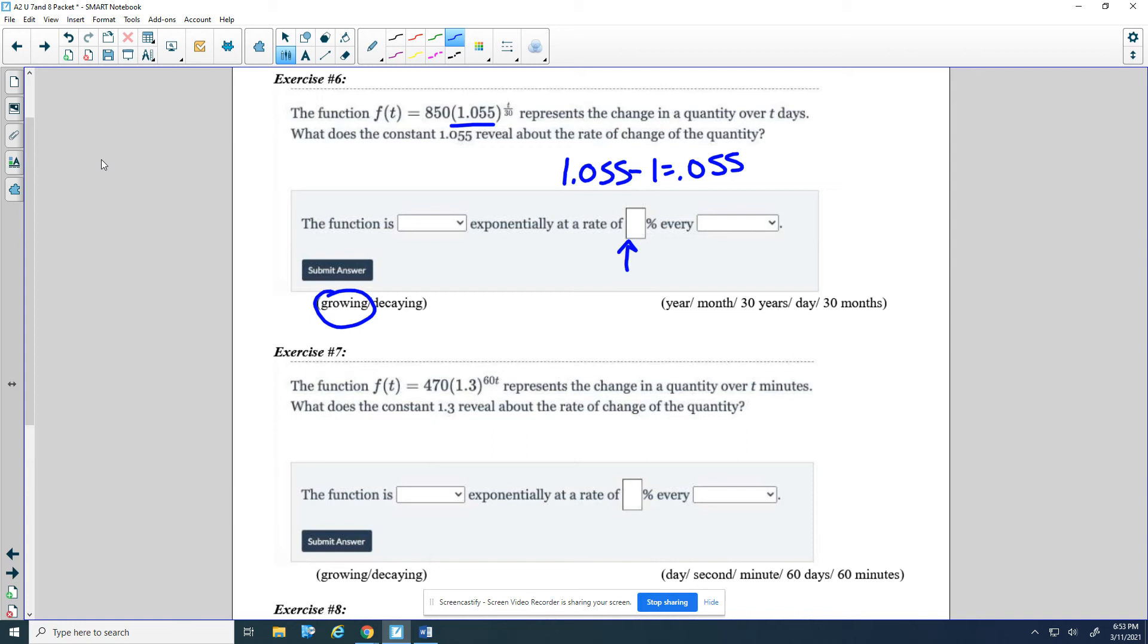Exponentially at a rate of... This is just what does that base tell me about the rate? This part should also be easy. So it's growing at a rate of 5.5% every what? So the t is measured in days. This tells me it takes longer than a day, 30 times longer than a day, because we have division. So it's going slower than the days.